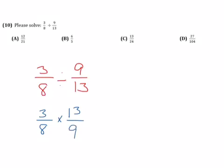Then we look for opportunities to simplify our fractions. We have a 3 and a 9. 3 divided by 3 equals 1, and 9 divided by 3 equals 3.